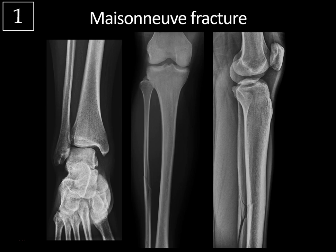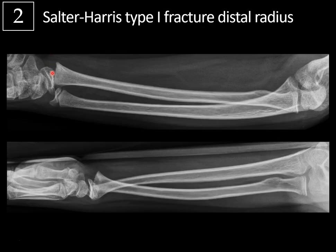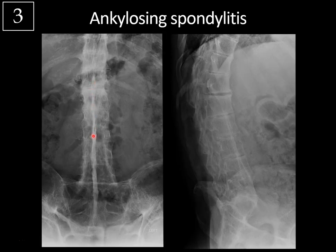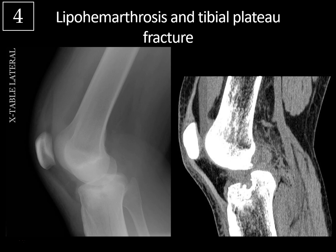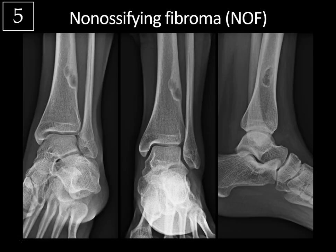Rapid review: Case 1 was the Maisonneuve fracture — disruption of the medial ankle mortise or medial malleolar fracture; evaluate for a proximal fibular fracture due to disruption of the distal tibiofibular syndesmosis. Case 2 Salter type 1 fracture involves the growth plate; the most common Salter fracture is type 2. Remember to look at all views carefully on a pediatric x-ray. Case 3, ankylosing spondylitis — dagger sign from interspinous ligament ossification; initial sign is fusion of the sacroiliac joints from symmetric sacroiliitis; other findings include squaring of vertebral bodies, Romanus lesions or shiny corner sign, and bamboo spine from thin bridging syndesmophytes. Case 4, lipohemarthrosis and tibial plateau fracture — fat on the surface on the cross-table lateral, hematocrit effect with serum and red blood cells separating out, clue to intra-articular fracture. Final case, non-ossifying fibroma greater than 3 centimeters: peripherally sclerotic, centrally lucent, eccentric, cortically based; gradually ossifies over time; benign lesion, most commonly in patients ages 10 to 15.